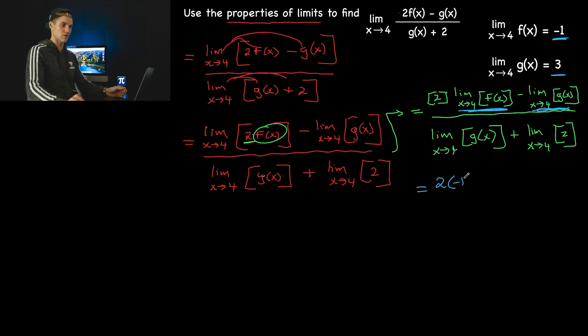2 times negative 1 minus 3, all over limit as x approaches 4 of g(x), which is 3, plus the limit as x approaches 4 of a constant. If you remember, there's a rule that the limit as x approaches a of any constant is just equal to that constant, no matter what the a value is. So this 4 here is irrelevant because this is just a constant that just stays as 2.